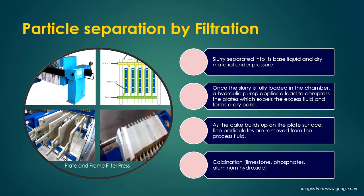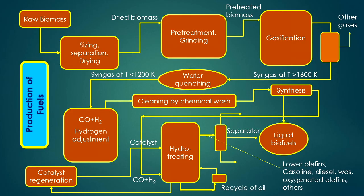Particle separation by filtration at industrial scale uses plate and frame filter presses to separate particulate material from slurry. These processes will be discussed in detail in successive lectures.